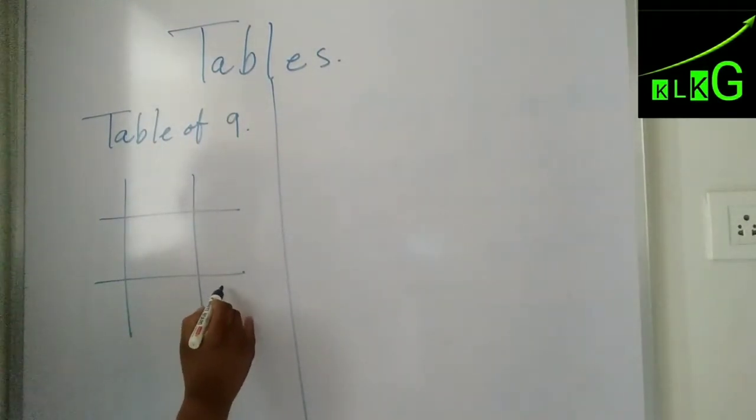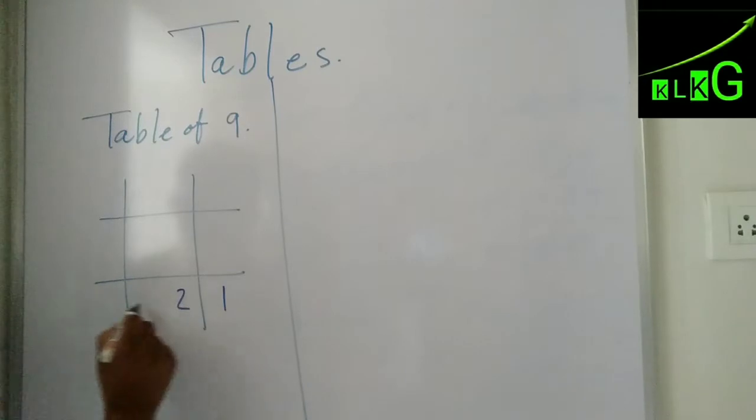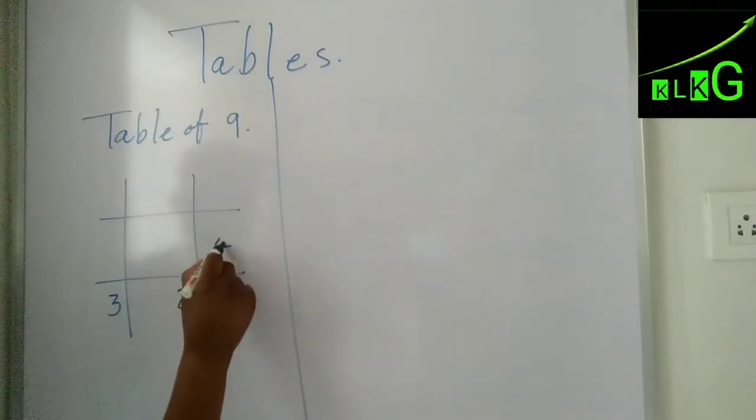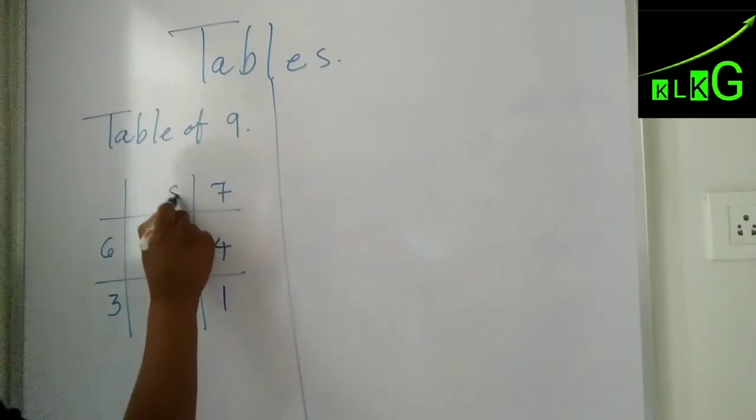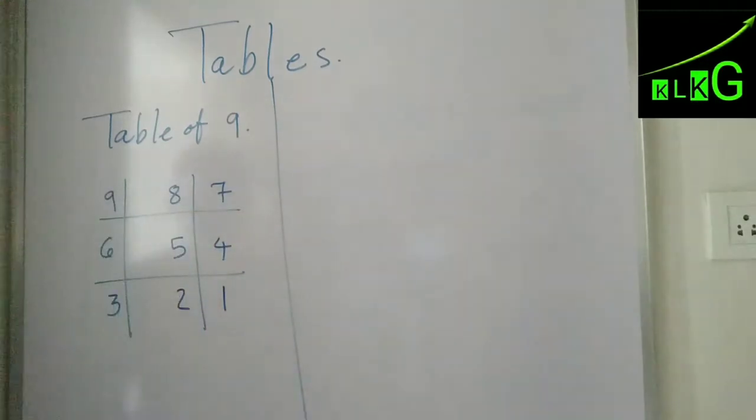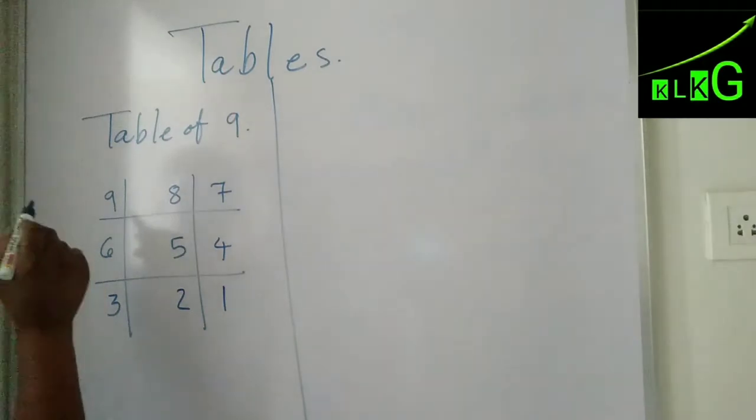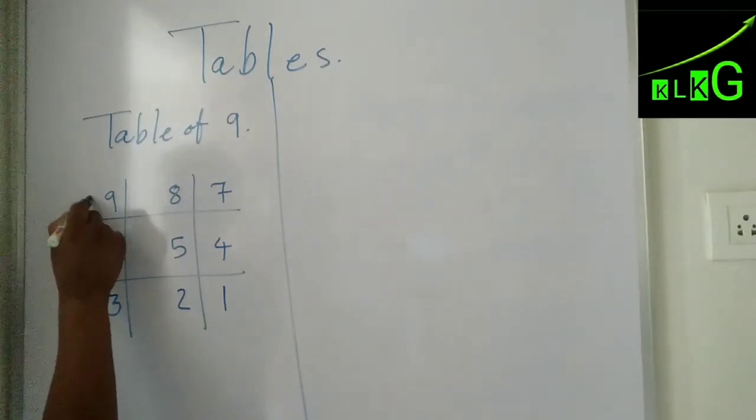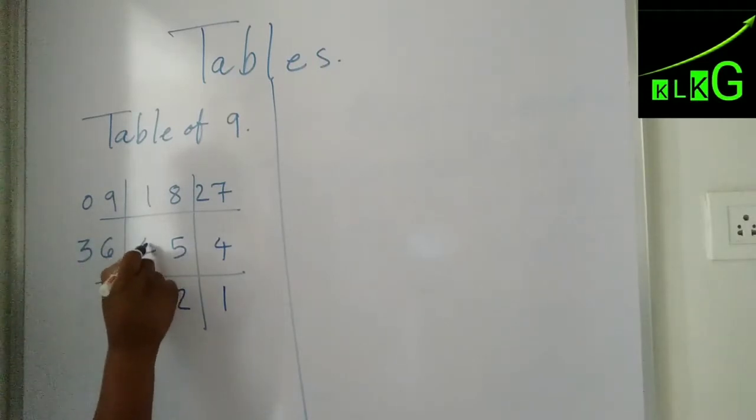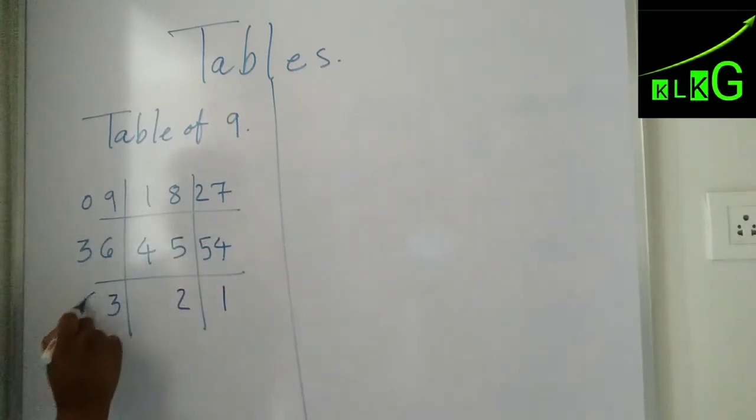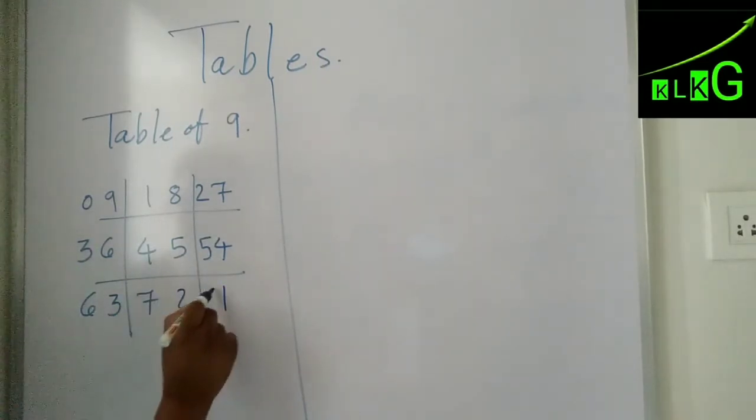First you will write like this: numbers 1, 2, 3, 4, 5, 6, 7, 8, and 9. Write this much first. And then what you will write is 0, 1, 2, 3, 4, 5, 6, 7, 8.